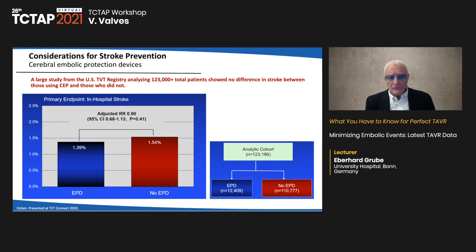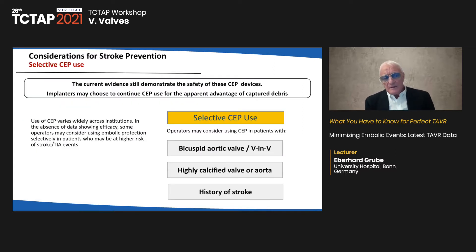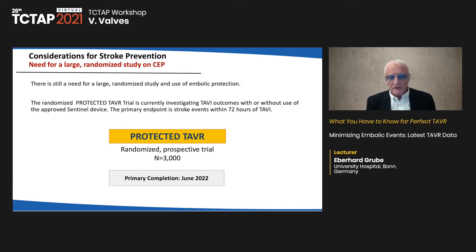A large study from the US TVT registry analyzing 130,000-plus patients showed no difference in stroke between patients using embolic protection devices and those who did not. However, there may be a group of patients where selective use is beneficial, including those with bicuspid aortic valve, valve-in-valve procedures, highly calcified valves, and patients with history of stroke. A large randomized study is needed.